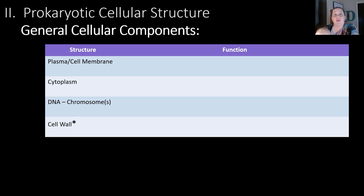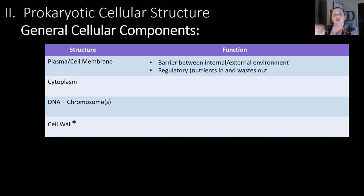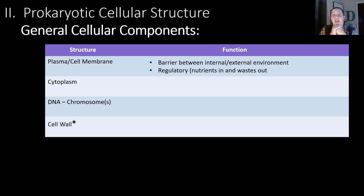Now we're going to look at both prokaryotic and eukaryotic cells, but let's focus on some general characteristics that all cells have. The first thing is that all cells have to have a plasma membrane, also called the cell membrane. This acts as the barrier that separates the inside of the cell from the outside, and it regulates what gets to go in and out — nutrients in and waste out of the cell.